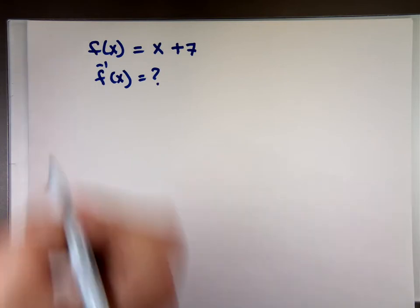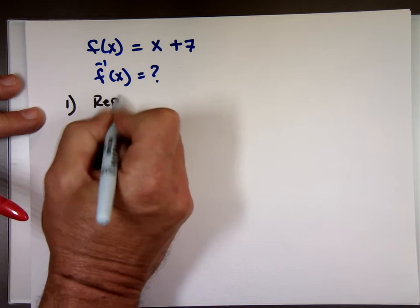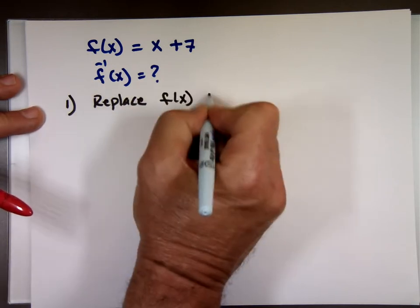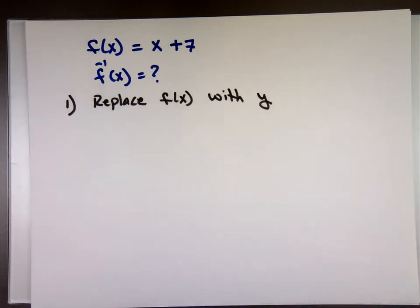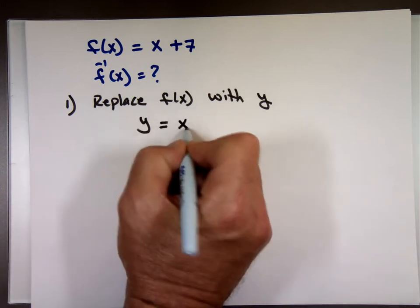There's a few steps we need to follow. The first step, what I do, I'm going to replace f of x with y. So, that question becomes y equals x plus 7.